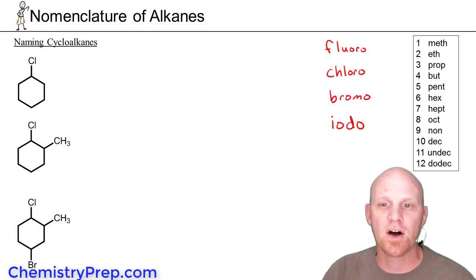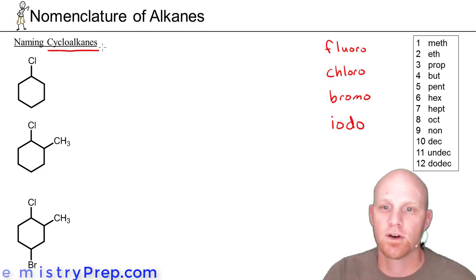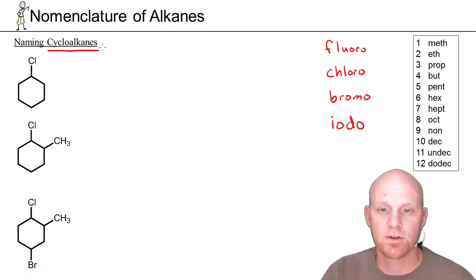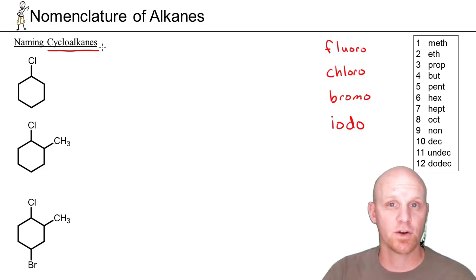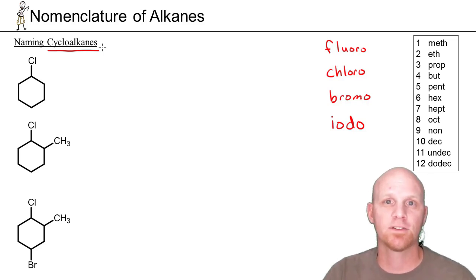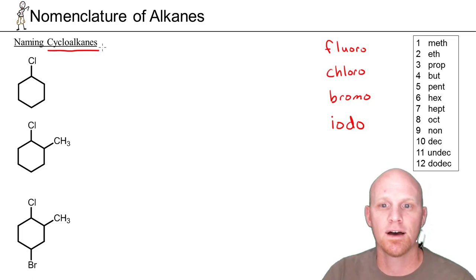Now we're going to take a look at naming some alkane rings. We call these cycloalkanes. Simply, if they're named as your parent chain, instead of just saying plain hexane or pentane, you'd say cyclohexane or cyclopentane to name that parent chain.